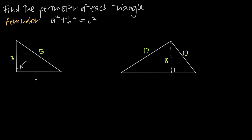If we want to find the perimeter, we're going to need to be able to add up the lengths of each of the sides. And we can't do that until we find the length of this unknown side. The way that we're going to do that is using the Pythagorean theorem.